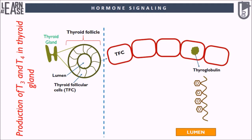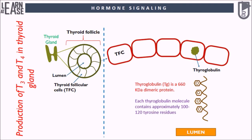Thyroglobulin is synthesized in the rough endoplasmic reticulum of the thyroid follicular cells and follows the secretory pathway to enter the colloid in the lumen of the thyroid follicle by exocytosis. Thyroglobulin is a 660 kilodalton dimeric protein. Each thyroglobulin molecule contains approximately 100 to 120 tyrosine residues.